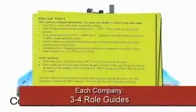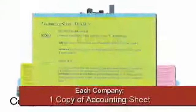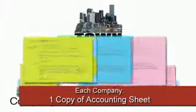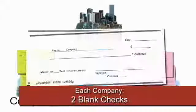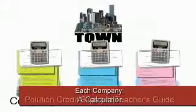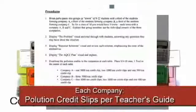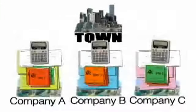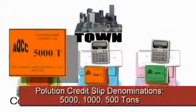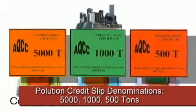Prepare a stack of materials for each company. The stack should include three or four copies of the role card for their company, one copy of the accounting sheet for their company, a couple of blank checks, a calculator, and the correct number of pollution credit slips as explained in the teacher guide. The credit slips are pre-printed in denominations of 5,000, 1,000, and 500 ton credits.